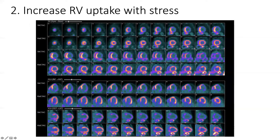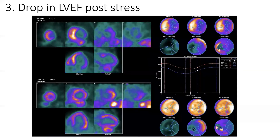The uptake of the right ventricle after stress and also at rest is an indirect sign of dysfunction, and it is not a good sign — it is a sign of worse prognosis.